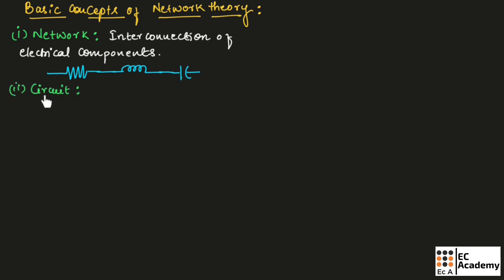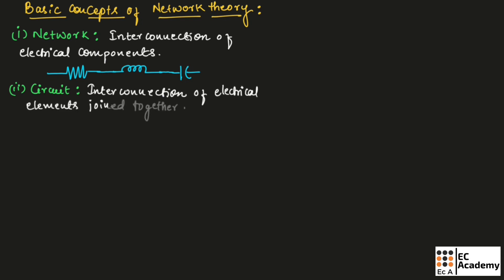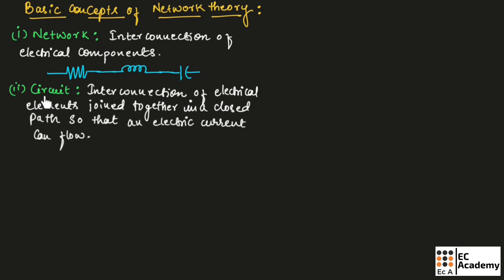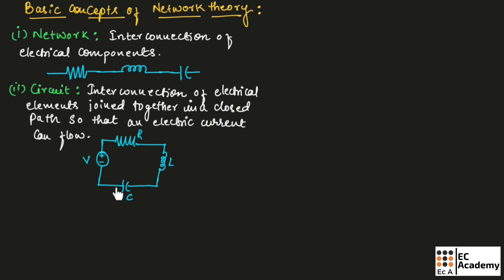Now, let us see what is a circuit. A circuit is interconnection of electrical elements which are joined together in a closed path so that an electric current can flow. This is the example of a circuit where the different electrical elements are joined together in a closed path.